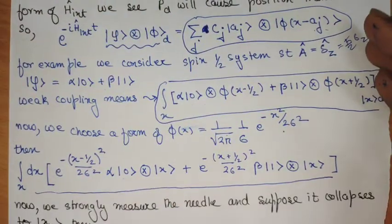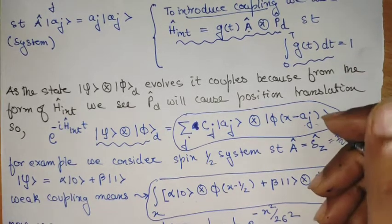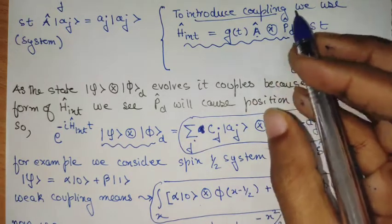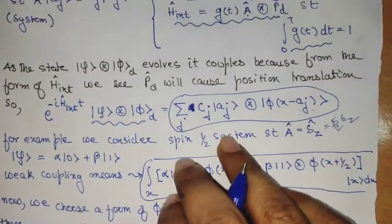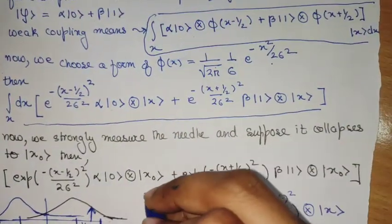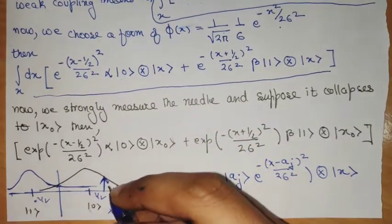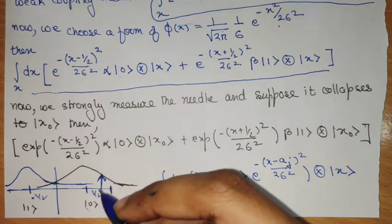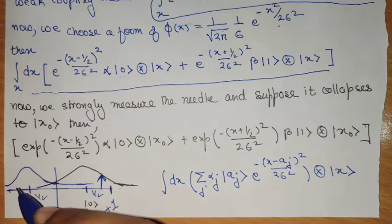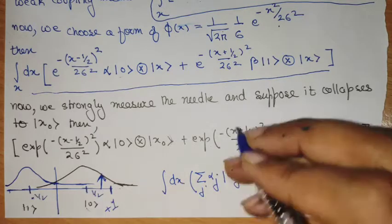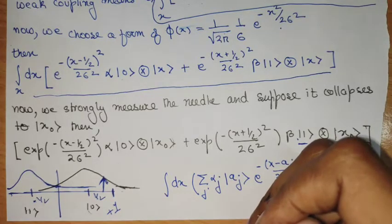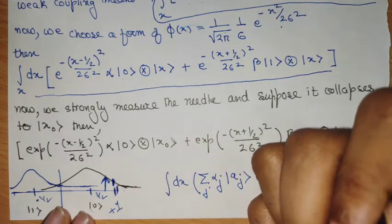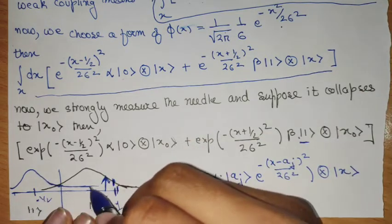That's all for this video. We discussed the weak measurement procedure by talking about a particular type of interaction Hamiltonian which can generate translations over the needle part. We can then perform a strong measurement to get some information on the system — in this case the biasing: measuring plus 1 signifies an increase in amplitude of the |0⟩ state, whereas a minus 1 value signifies an amplitude increase of the |1⟩ state, because the Gaussian function will decay toward that region.